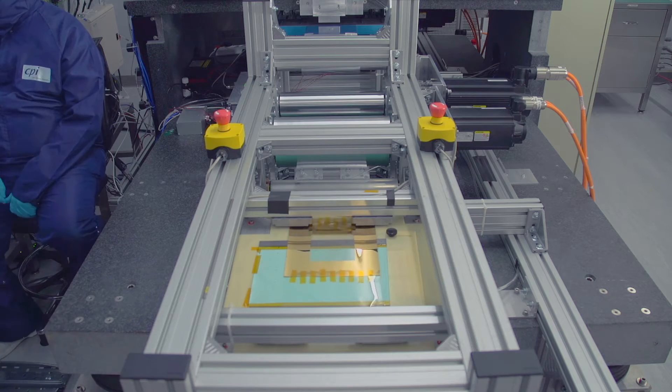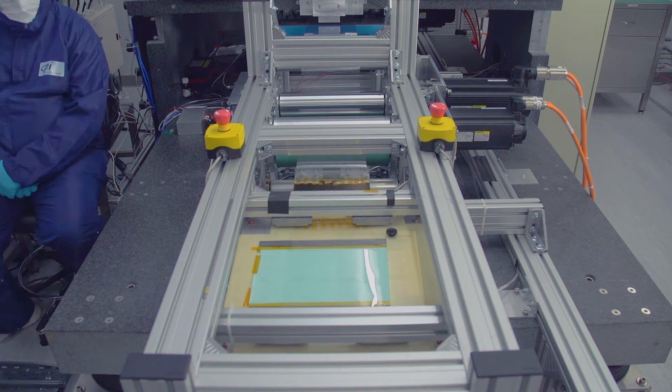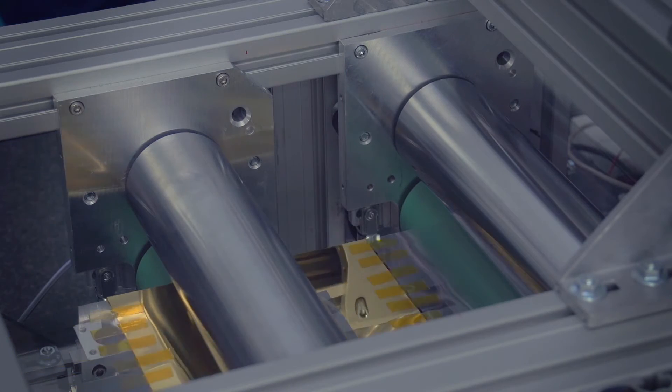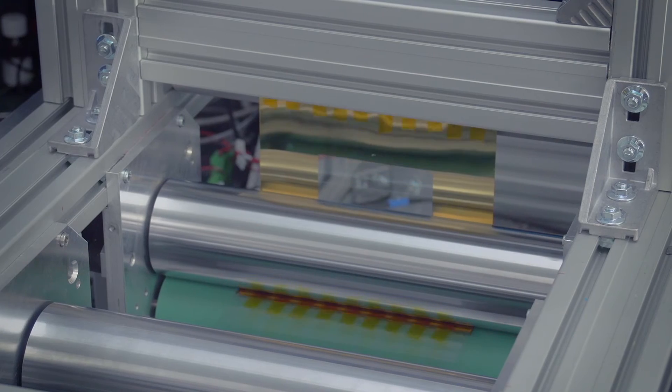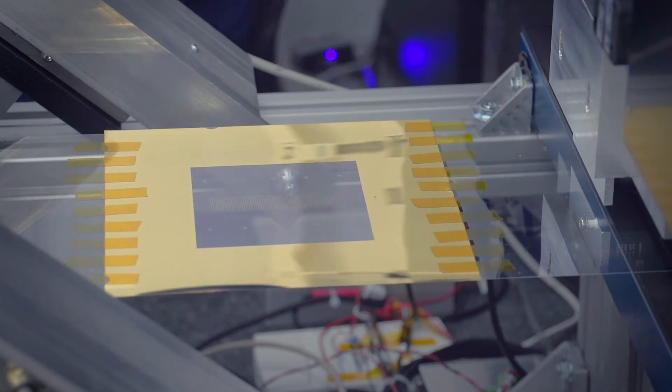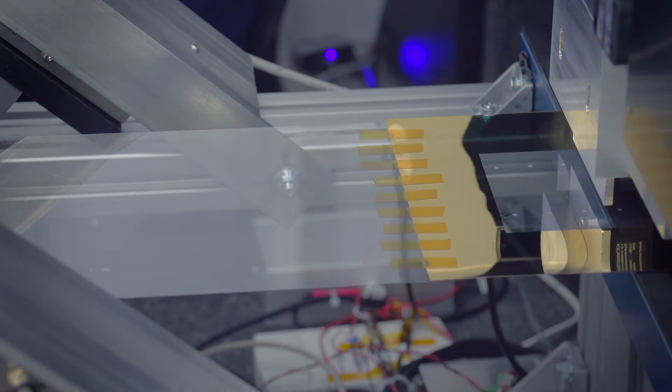Developed over three years in a European collaboration involving CPI and maskless photolithography manufacturer Heidelberg Instruments, the key feature of the new tool is its ability to expose rolls of film with digital images generated in real time.